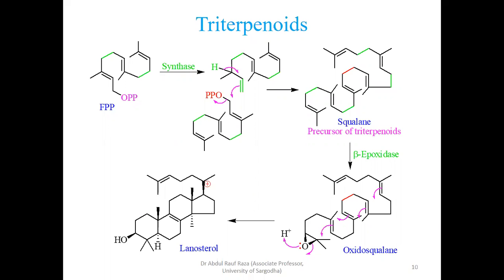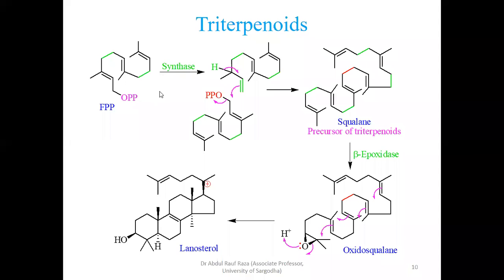Up through diterpenoids and sesterterpenoids, all are 25-carbon containing. When GGPP combines with another isoprenyl unit, it results in a 25-carbon unit that may undergo a variety of different reactions. So up till 25-carbon: monoterpenoid, sesquiterpenoid, diterpenoid, sesterterpenoid — all four of these terpenoids are formed by head-to-tail reactions.